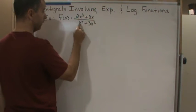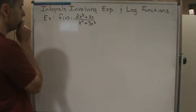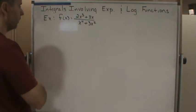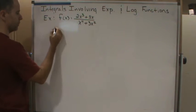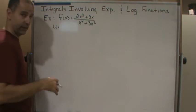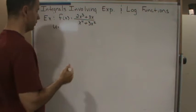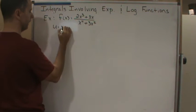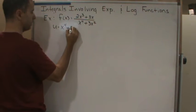Let's just try it out, let's see what happens. If it doesn't work out we just start over. So u equals x to the fourth plus 3x squared.